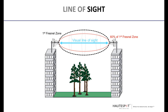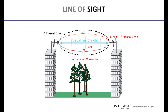The Fresnel zone is calculated based on the distance of the link and the frequency being used. For example, using 5 GHz at a distance of 1 mile, both antennas will need to be installed at a sufficient height giving roughly 9 feet of clearance from any obstruction. You would also need to add about 0.66 feet to account for the curvature of the Earth — so roughly 10 feet total for a 1-mile link at 5 GHz.